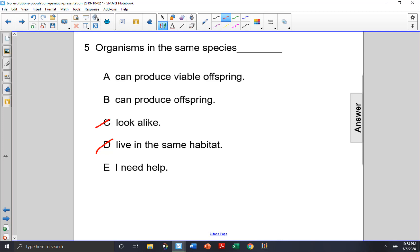Choice B: can produce offspring. Don't forget about the mule, the hybrid of a horse crossing with a donkey. Even though the mule is offspring of the horse and the donkey, the mule cannot have its own offspring. So choice B is not the correct answer.